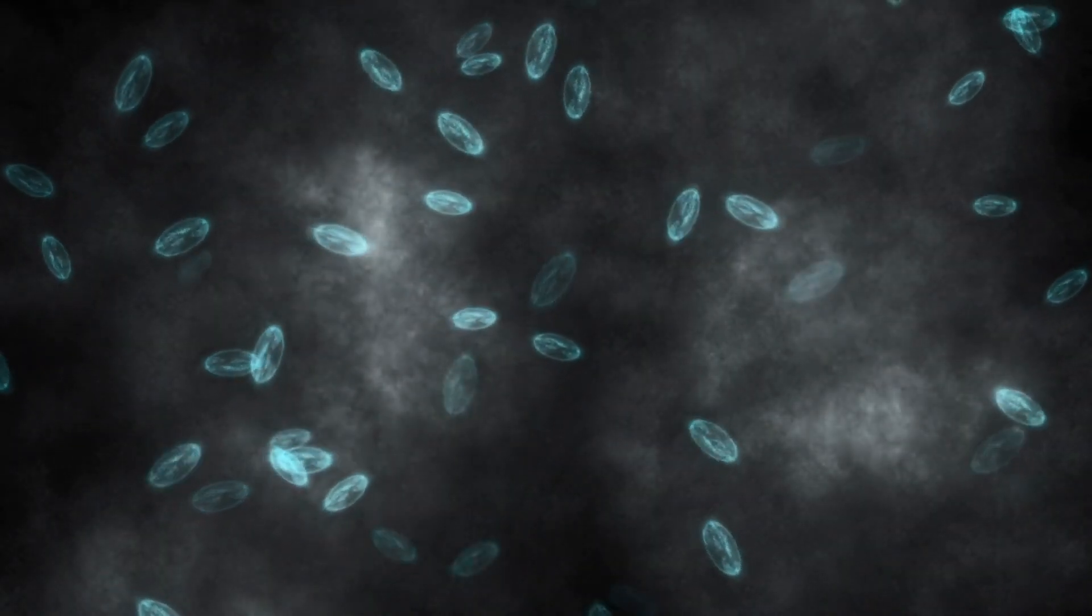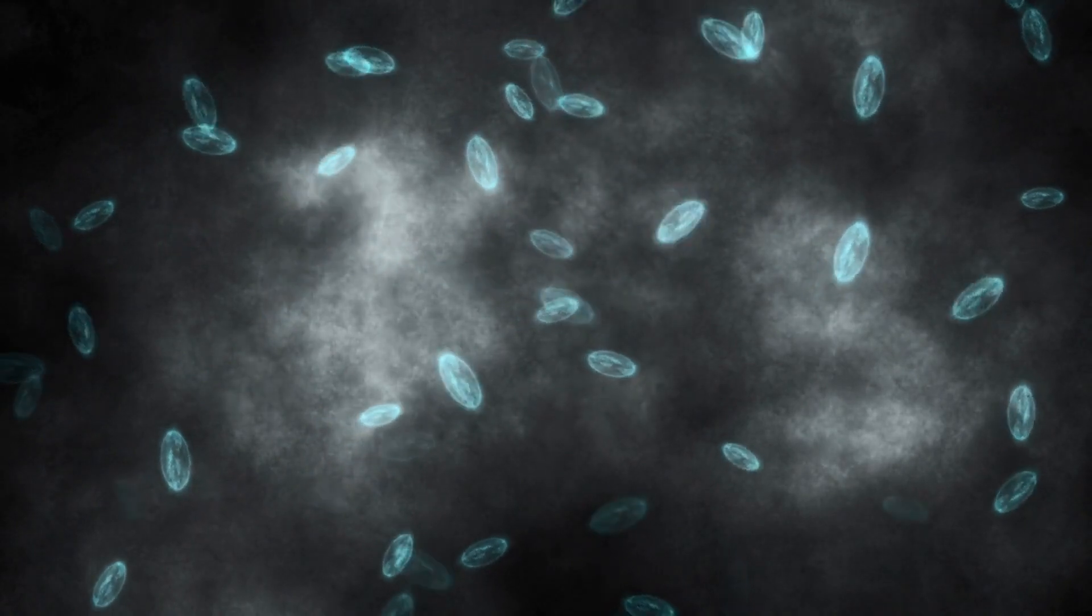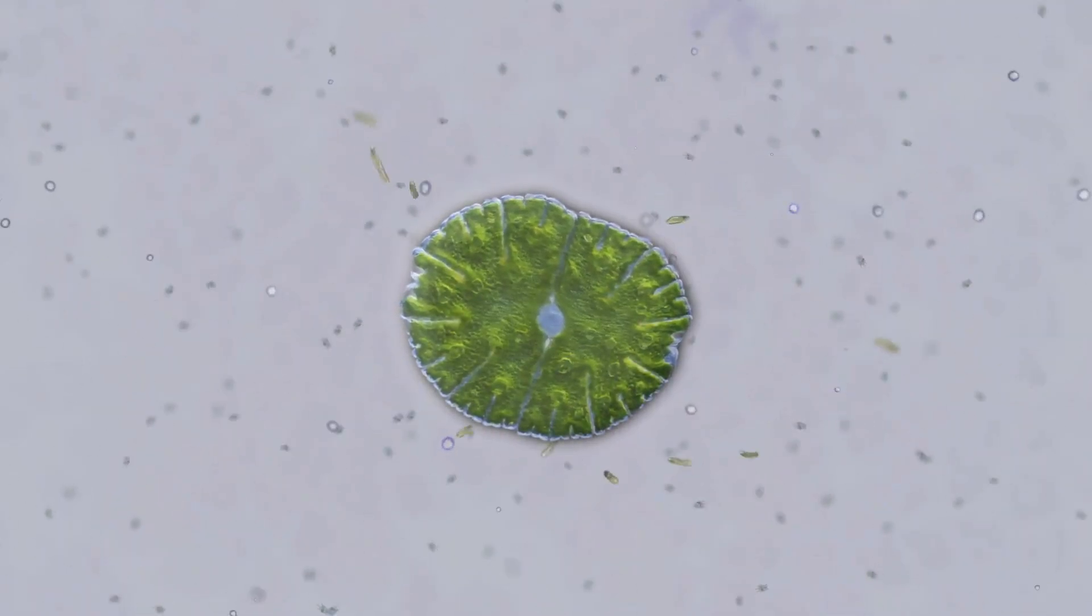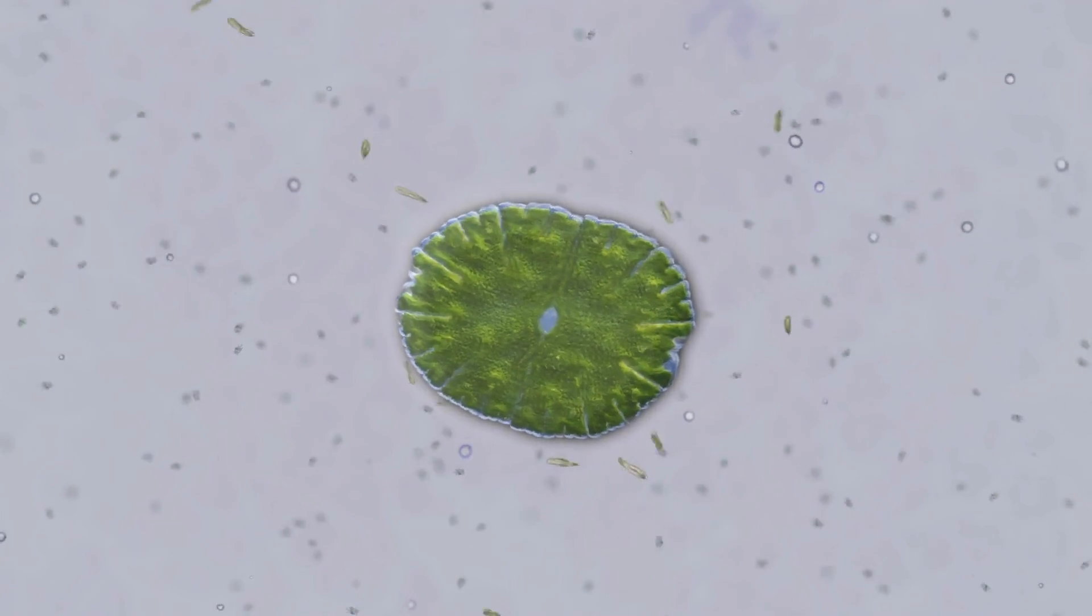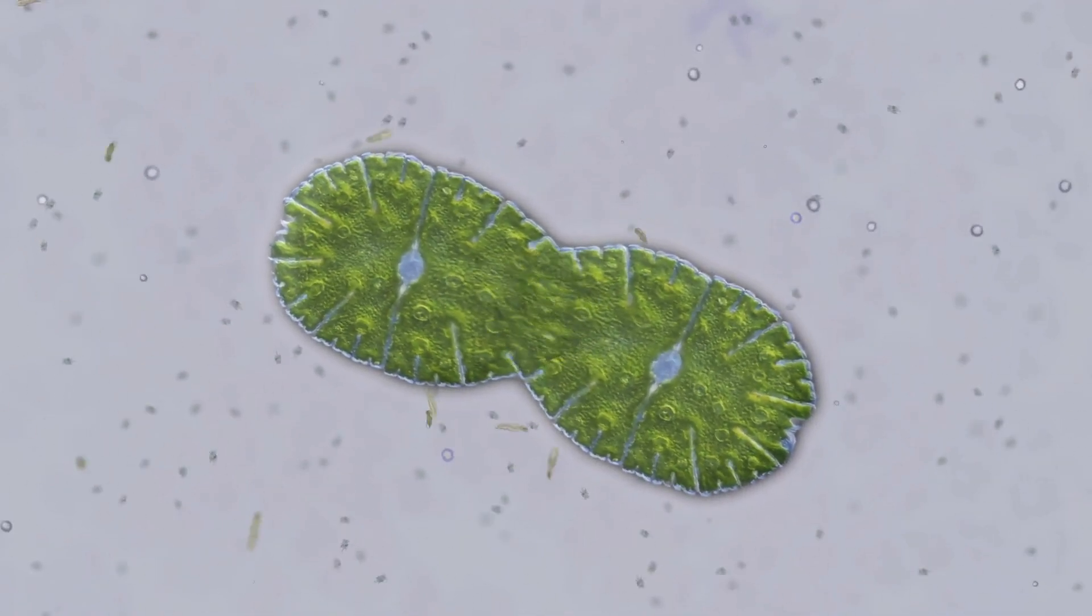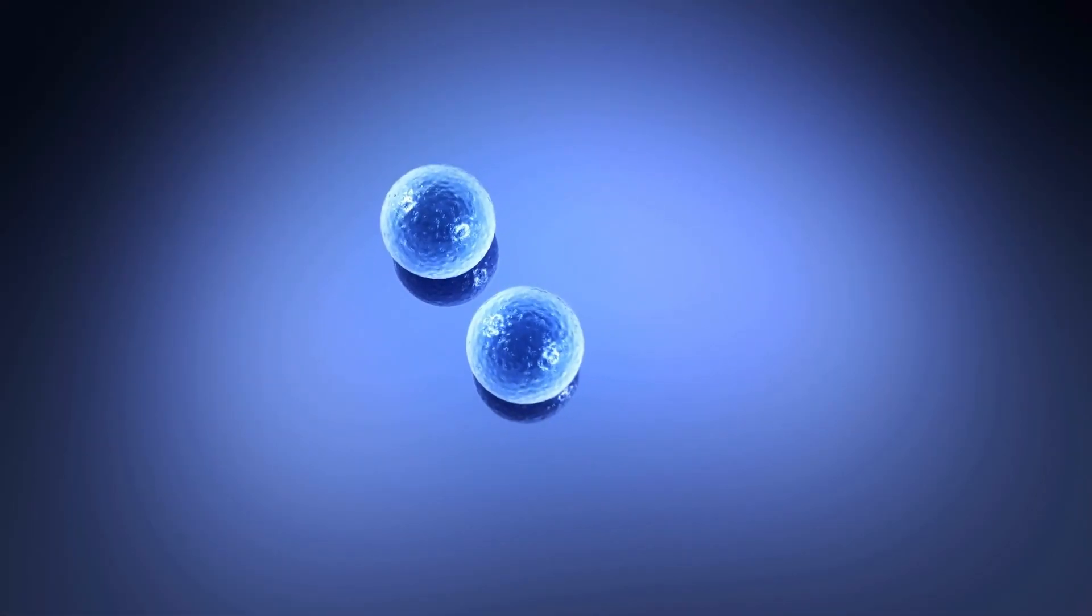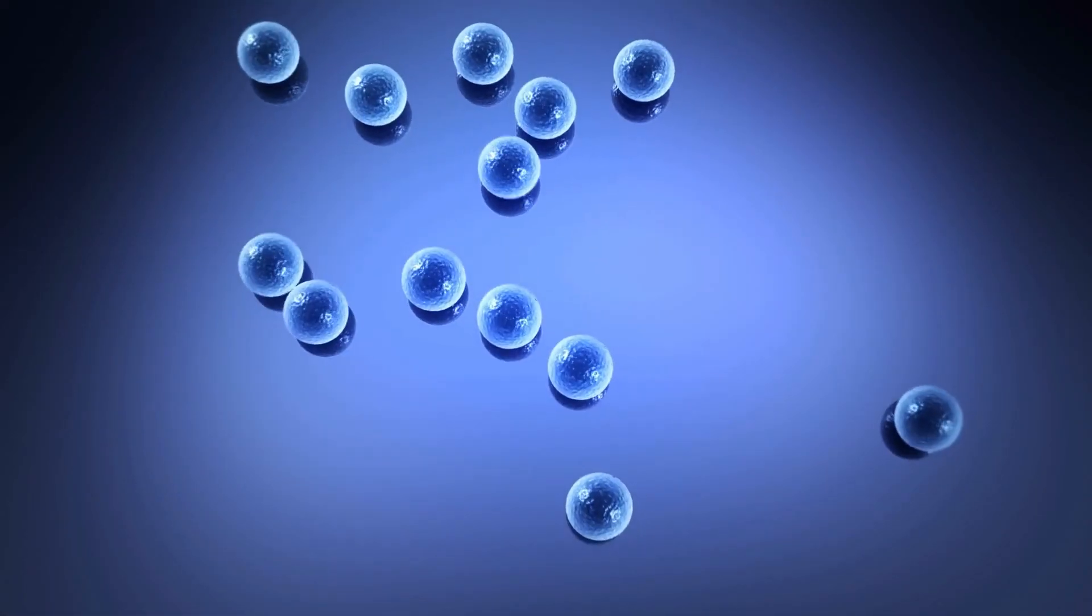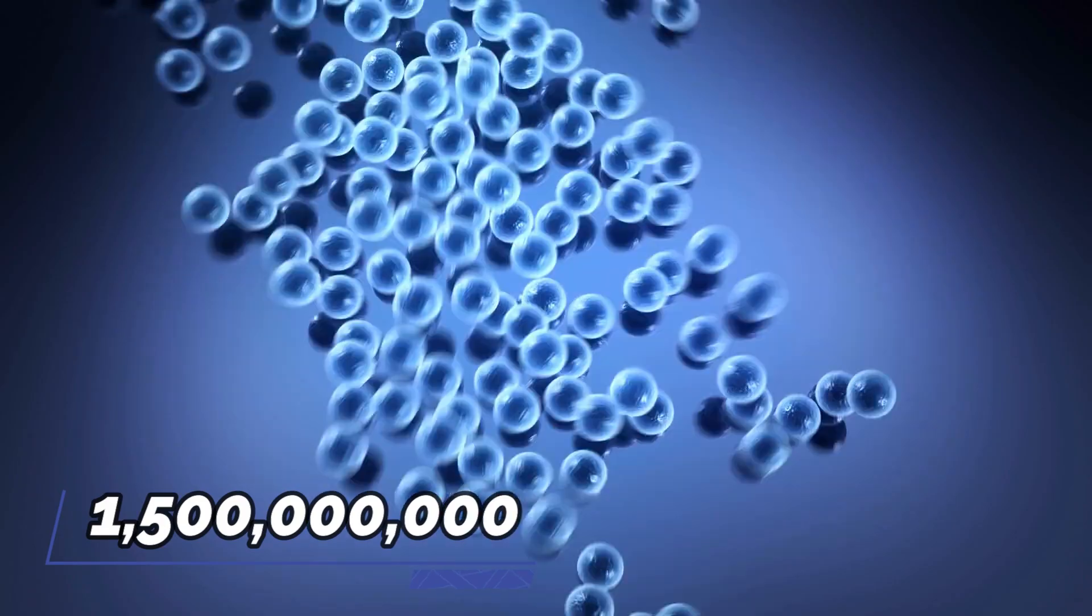These microbes did another important thing. With the oxygen they created throughout the year, it allowed single cellular organisms to finally turn into multi-cell organisms. And this is the first step towards complicated living things. And that's around one and a half billion years ago.